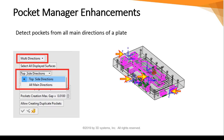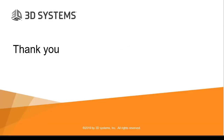For the pocket manager, there is a new improvement in version 15: multi-directions. The system detects pockets from all main directions of the plate. Two options: top side direction, which means excluding the bottom, or all main directions. The system will create a UCS for each direction. Thanks for watching this video.